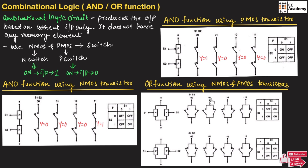When input is 01, switch S2 turns ON and switch S1 is OFF — we get output through switch S2, so output is 1. For input 10, switch S1 is ON and switch S2 is OFF — there is a path between A and B, so output is 1. When input is 11, both switches are ON — output is 1. This truth table represents the OR function: 00 gives 0, 01 gives 1, 10 gives 1, and 11 gives 1, which represents OR operation.